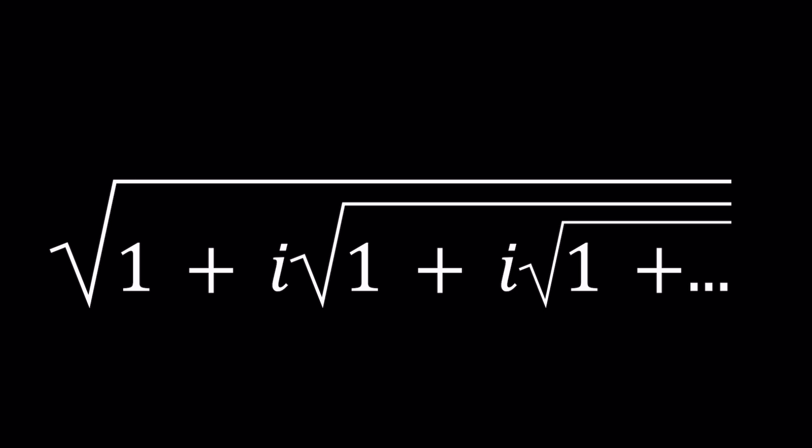So to be able to evaluate an expression like this, we're going to take advantage of the fact that this expression contains itself. What is that supposed to mean? This is what I'm talking about. When we set the whole thing equal to z, then we realize that we have the z inside z.